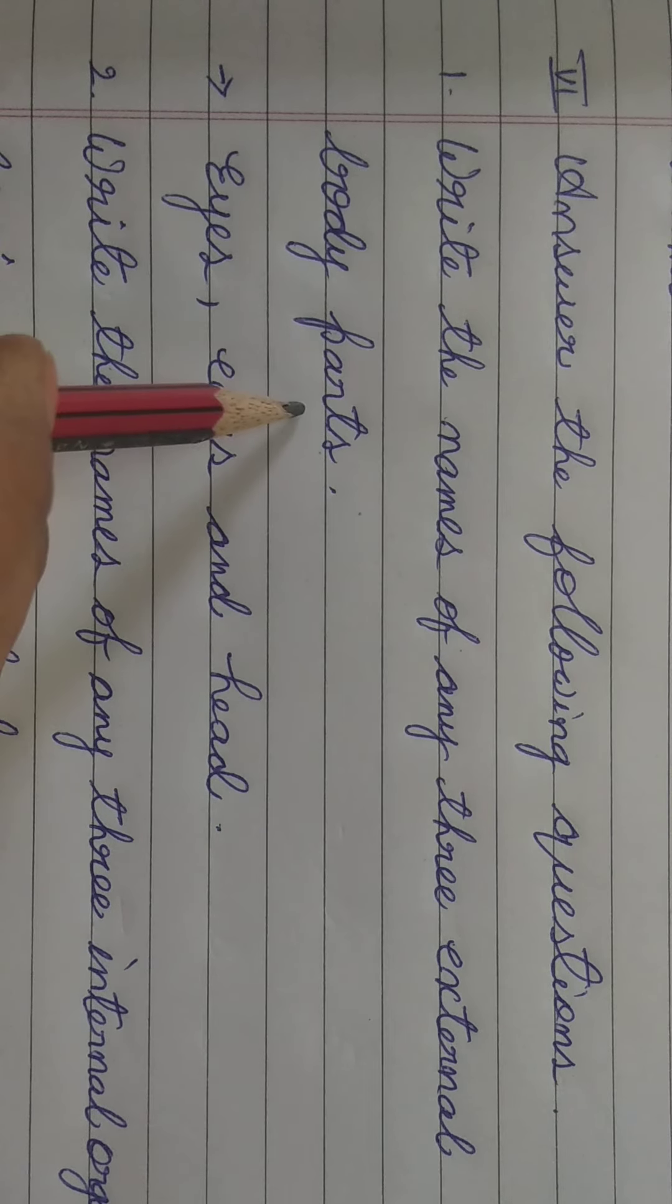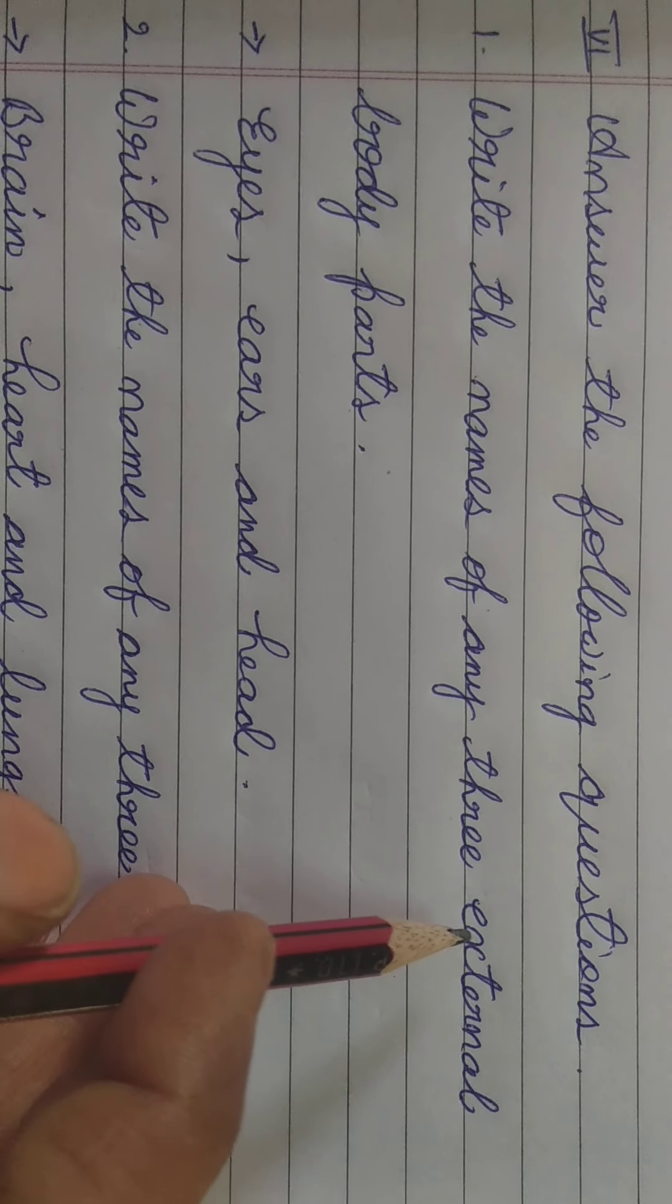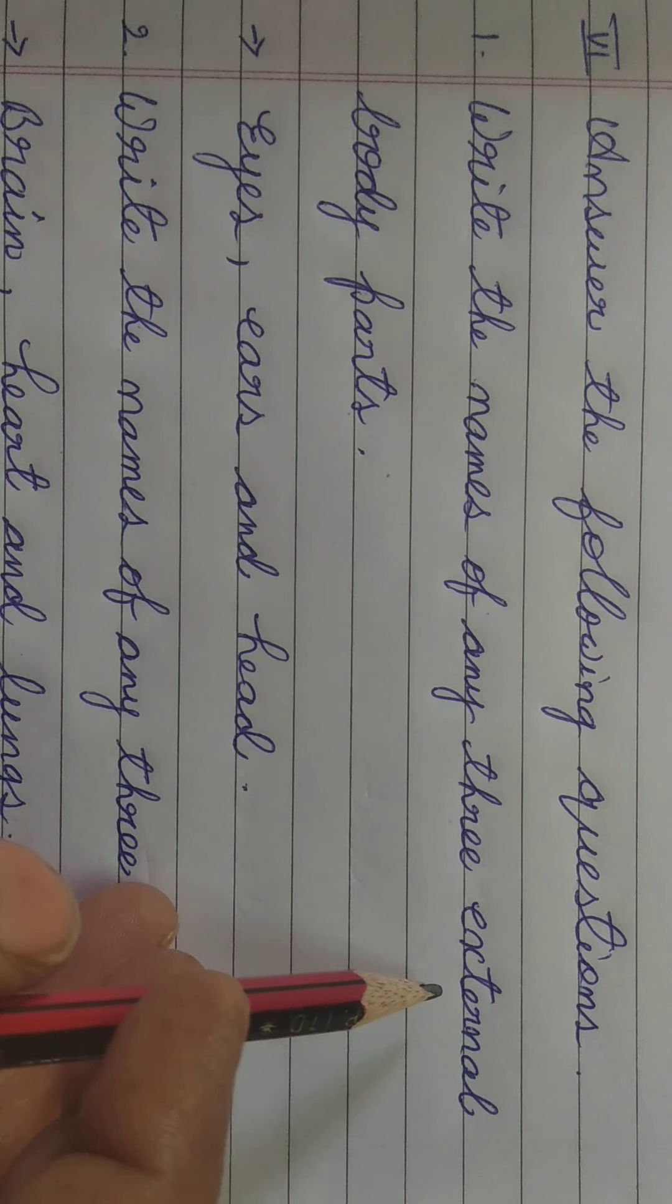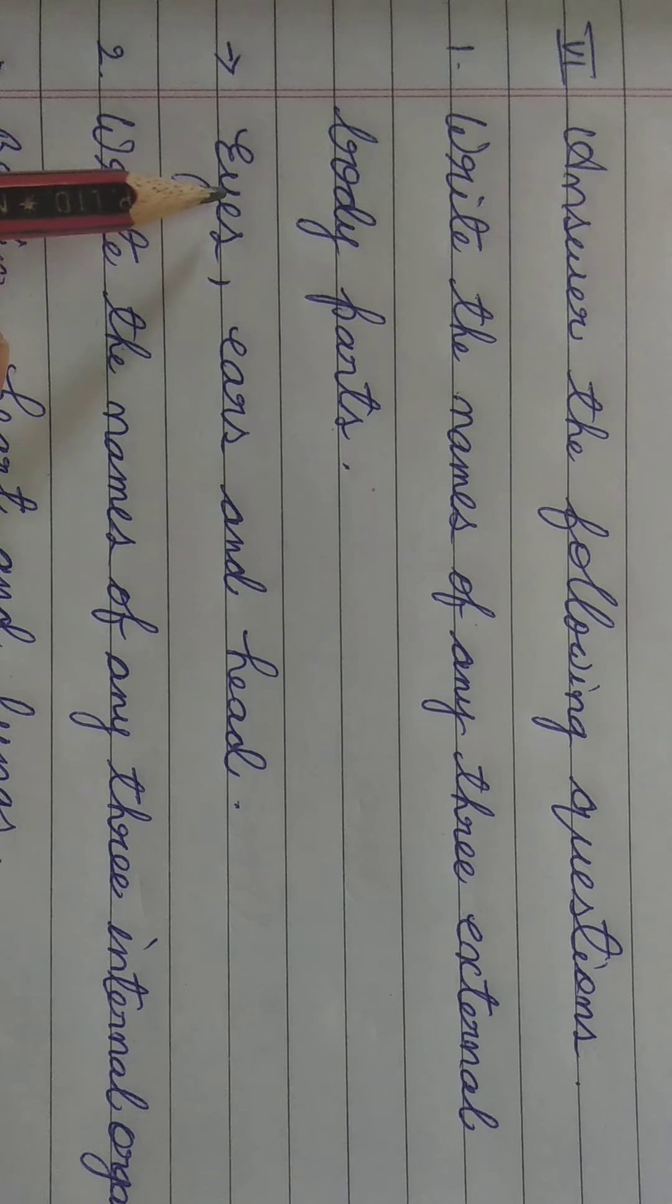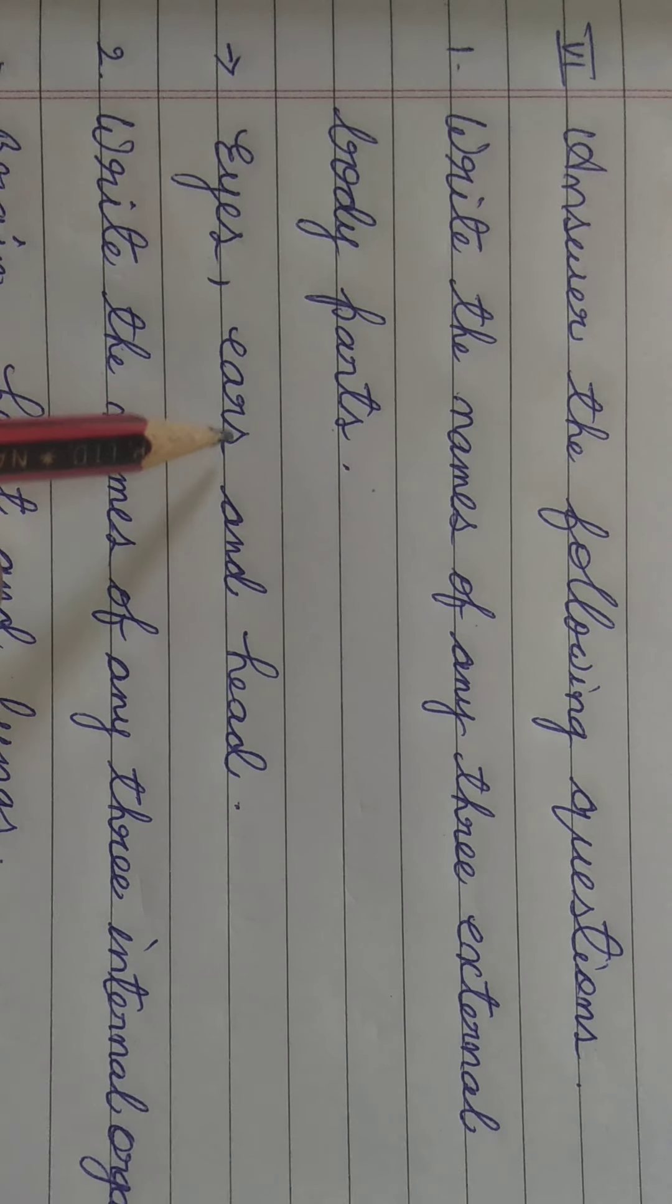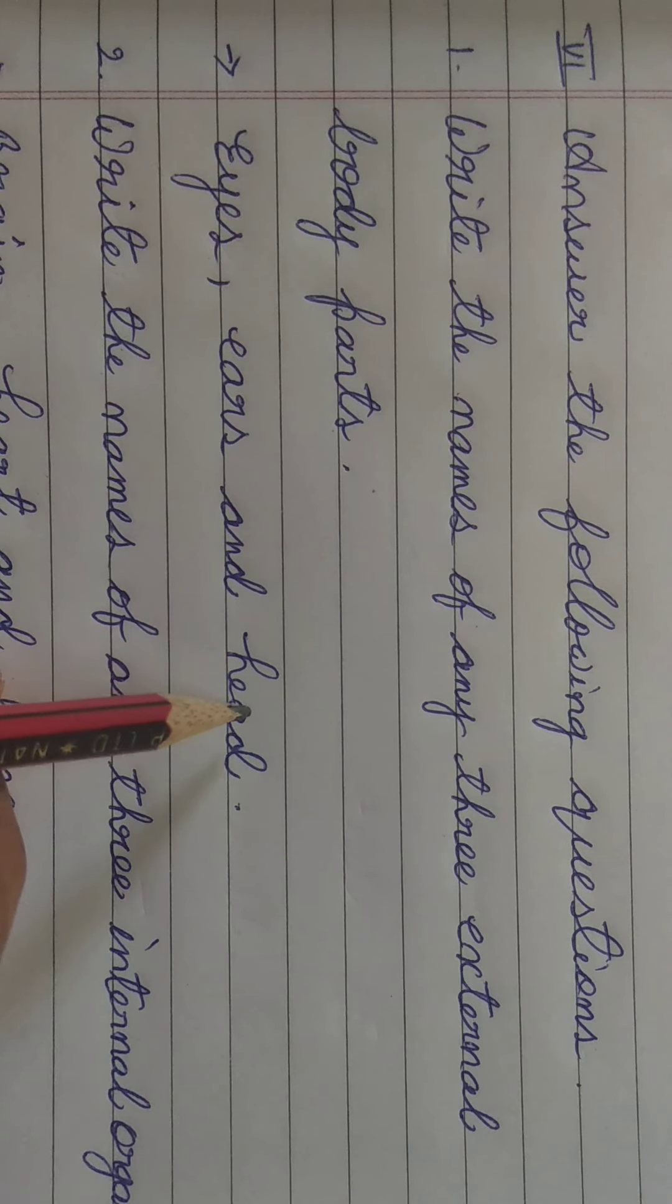Yahaan koi bhi three external body parts ko likhne ke liye kaha gaya hai. What are external body parts? The body parts we can see and touch. What are they? E-Y-E-S eyes, E-A-R-S ears and H-E-A-D head.